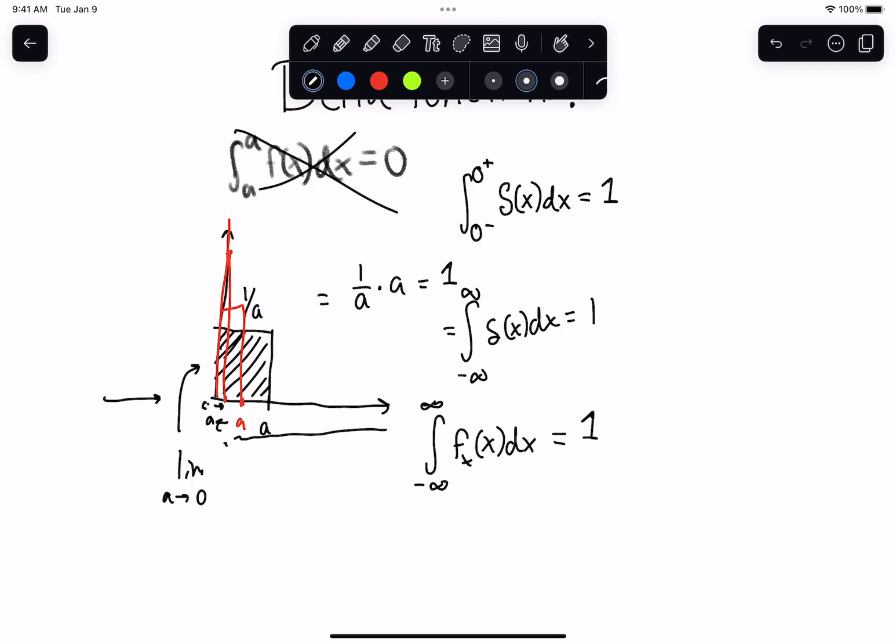So for a uniform random variable, as we really, really shrink, or as we basically say, if this thing can only output a single number, the only way this is possible is if we have a delta function at that particular point. So this is one way you can use to actually go from discrete to continuous random variables.